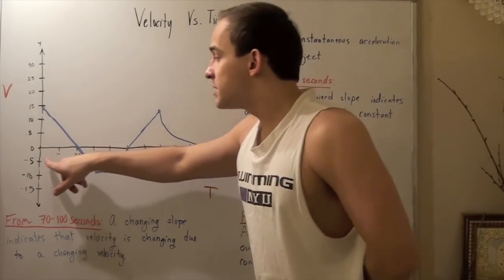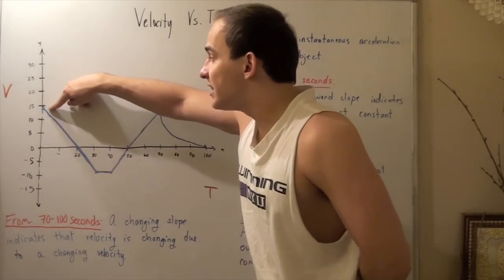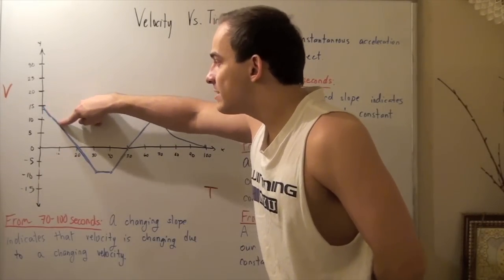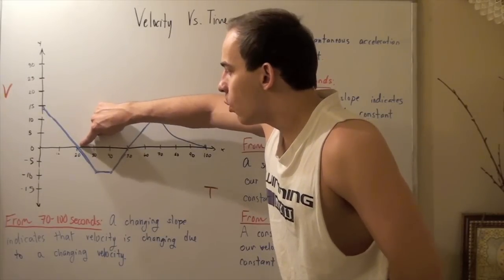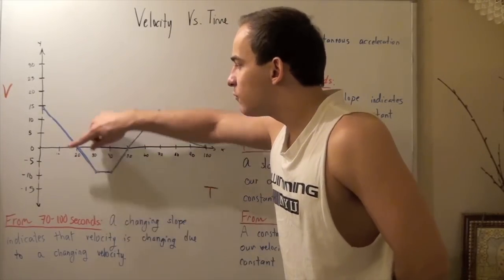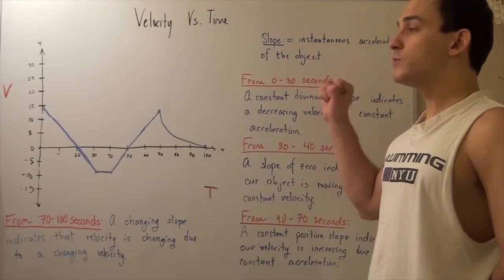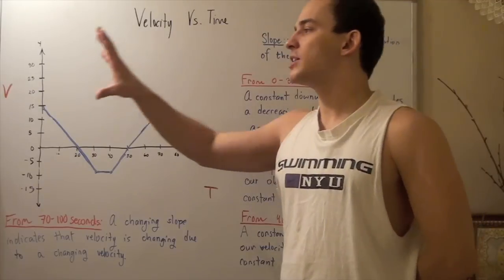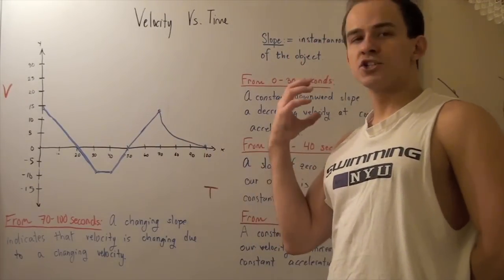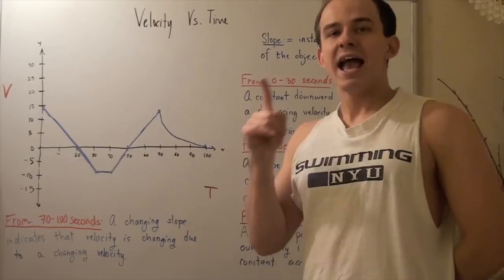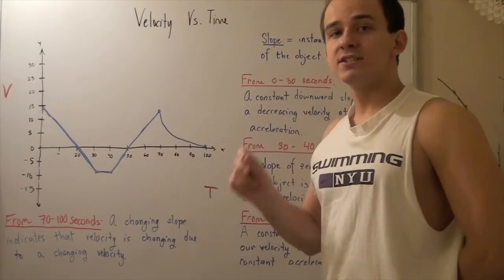From time equals zero to time equals five seconds, our velocity begins to decrease, and in fact it decreases all the way down to zero. So that means when our object is moving in the positive direction, it must accelerate in the opposite direction — it's decelerating — and that's indicated by this downward constant slope.